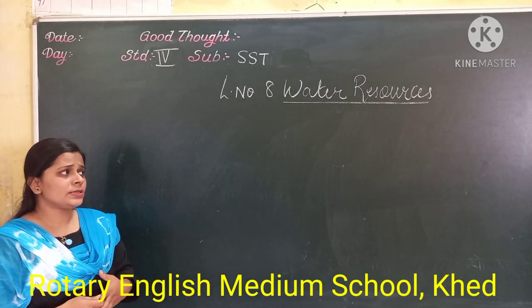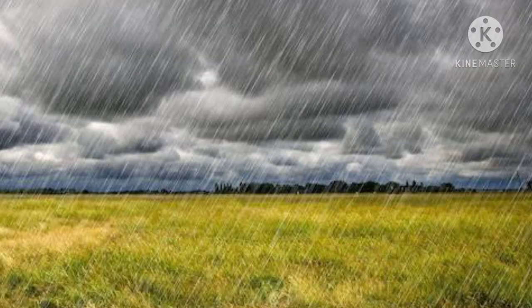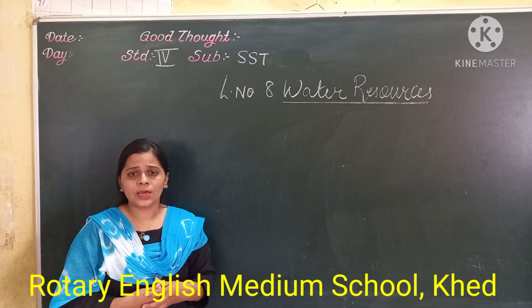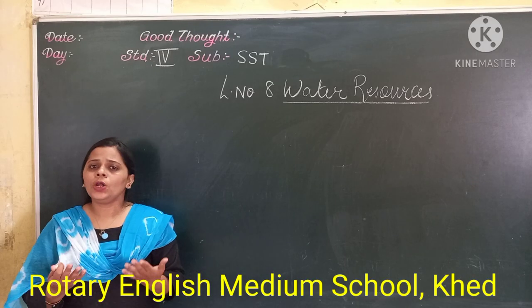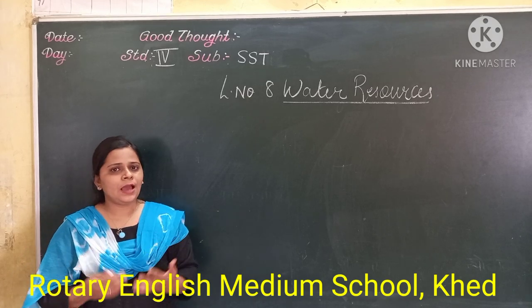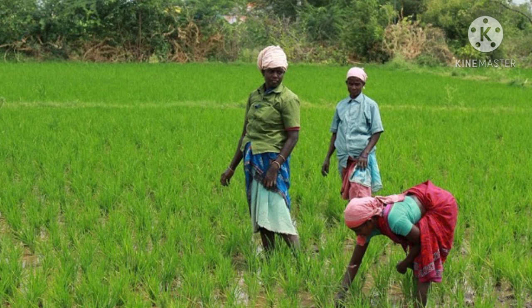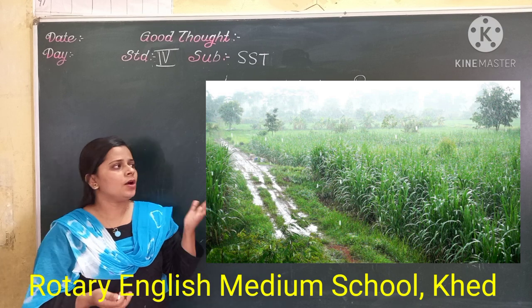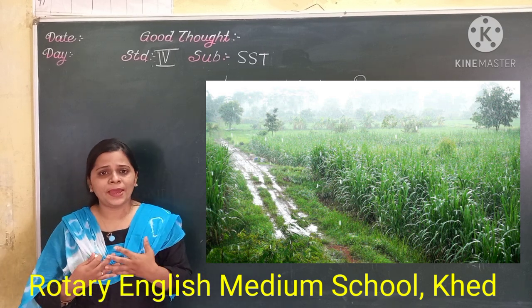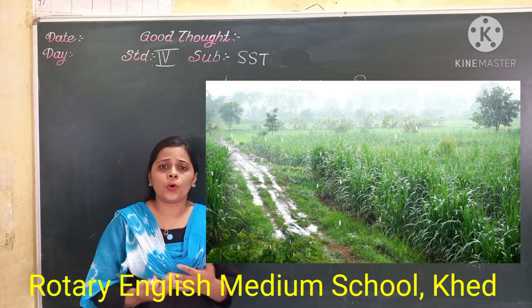So students, the main source of fresh water on the earth is very limited. Now students, you all know that India is an agricultural country. So mostly the farmers in India depend on monsoon — they depend on rain for growing crops.